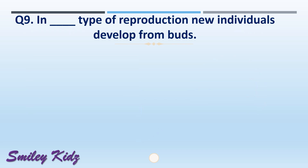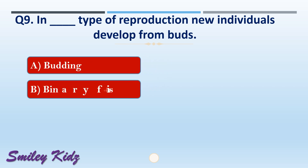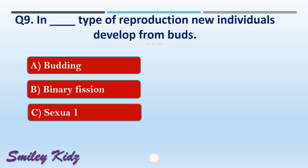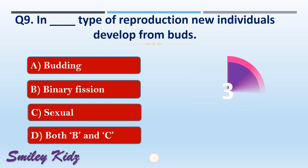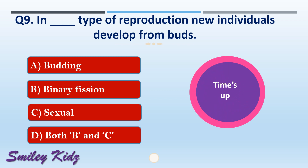Question number nine: in dash type of reproduction, new individuals develop from buds. The options are: A) budding, B) binary fission, C) sexual, or D) both B and C. The right answer is option A, budding. In budding type of reproduction, new individuals develop from buds.